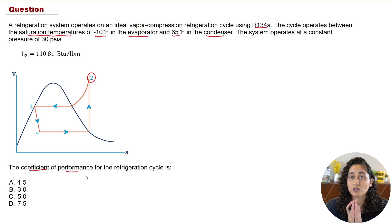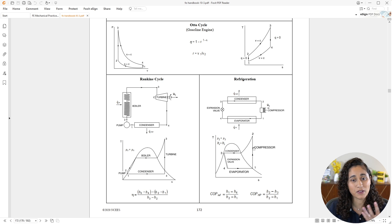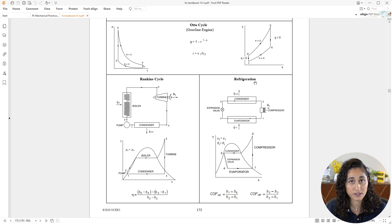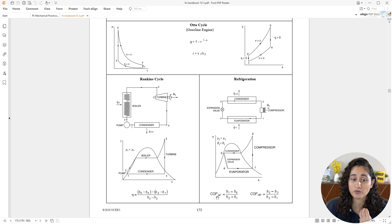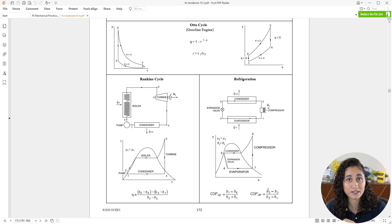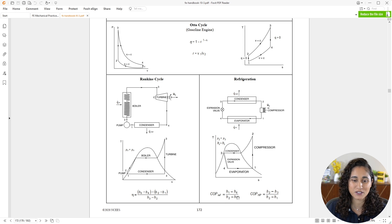The first thing we're going to do is go to the reference handbook and take a look at the equation for the coefficient of performance. In the thermodynamics section, you are given the temperature versus entropy diagram for the refrigeration cycle. There are two equations for the coefficient of performance: this one is for the refrigeration cycle and this one is for the heat pump. For this problem we're going to use the refrigeration cycle equation.